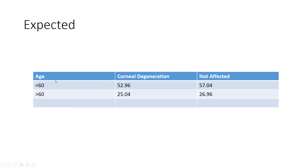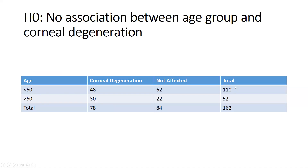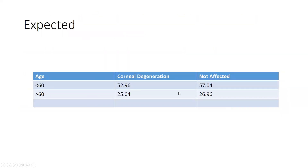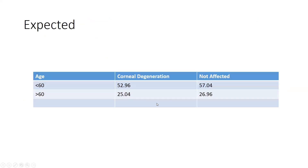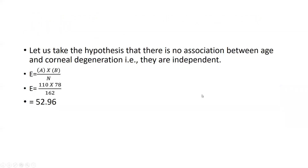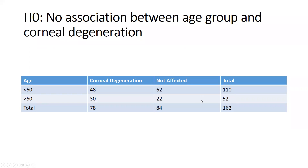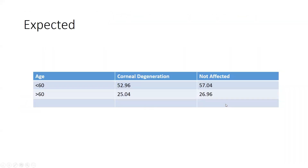Continuing the expected frequency calculations: for the greater-than-60 with corneal degeneration cell: 52 × 78 / 162 = 25.04. For the greater-than-60 not affected cell: 52 × 84 / 162 = 26.96. All four expected frequencies have now been calculated.